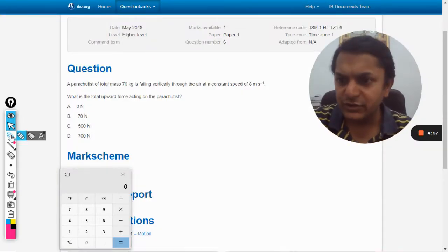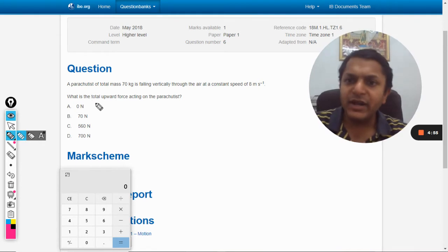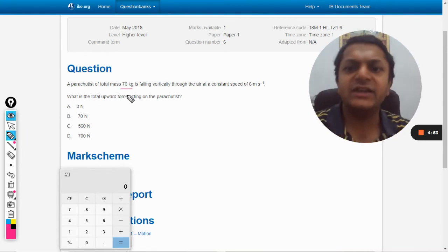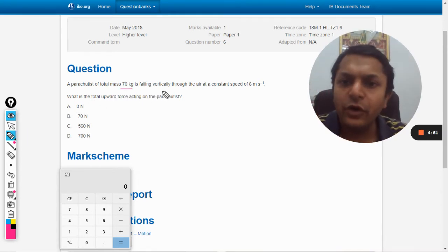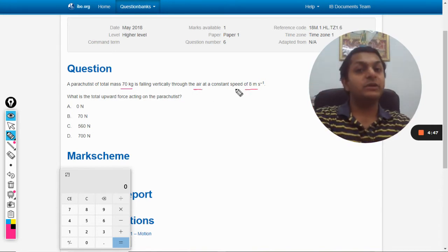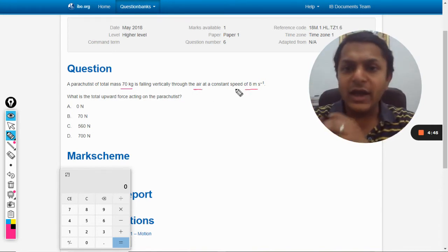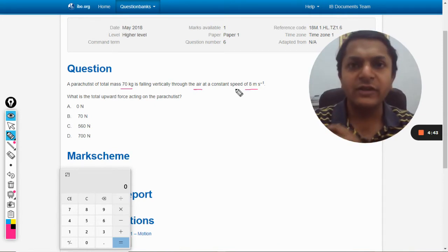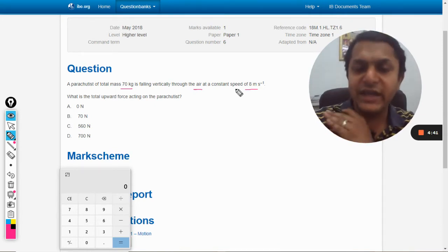Okay, according to this question, a parachutist of total mass 70 kg is falling vertically through the air at a constant speed of 8 meters per second. Now, when a body is falling freely under gravity, it cannot move at a constant speed.